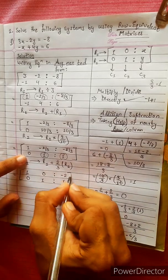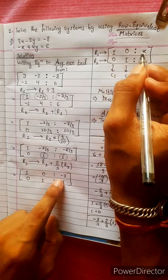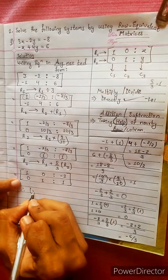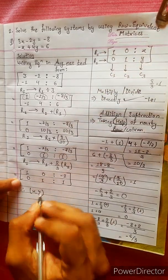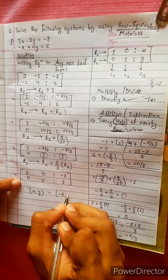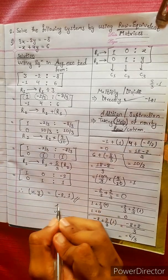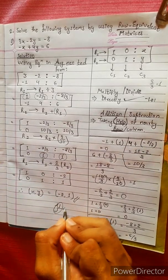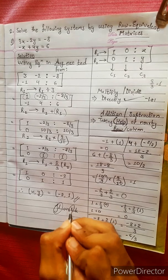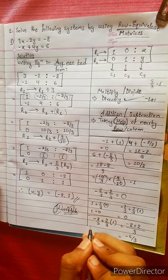Now we have the matrix in the form: 0, 0, 0, 1. So x and y: x equals minus 2, y equals 1, and this value equals 0.